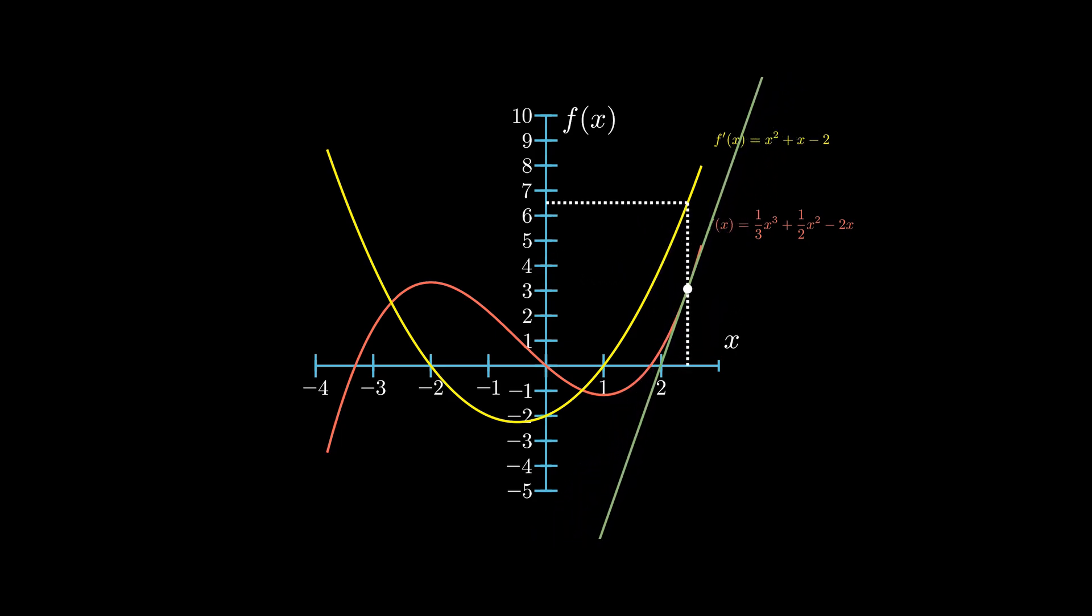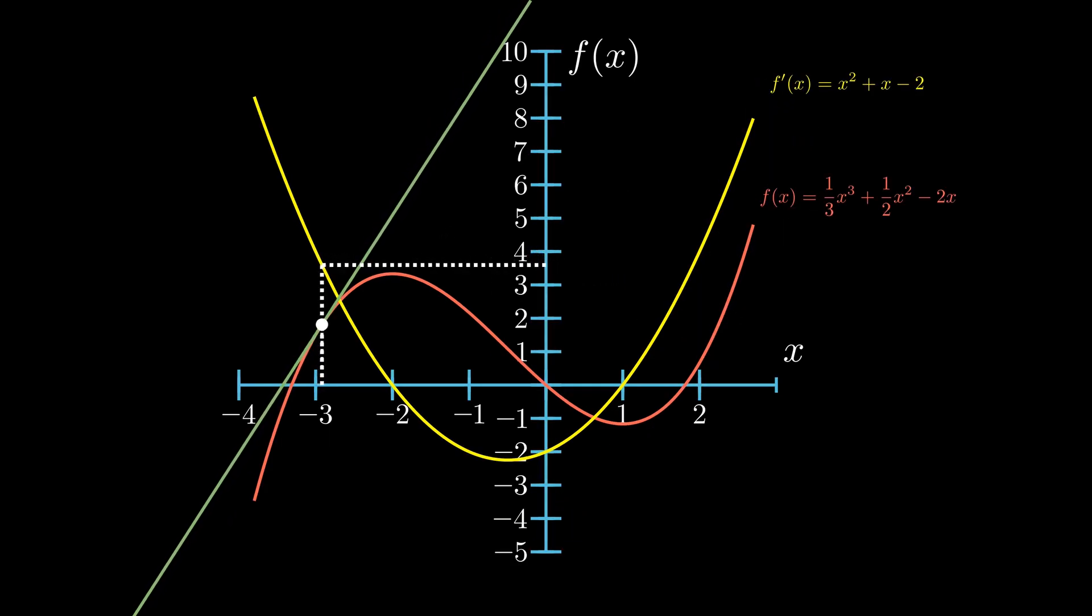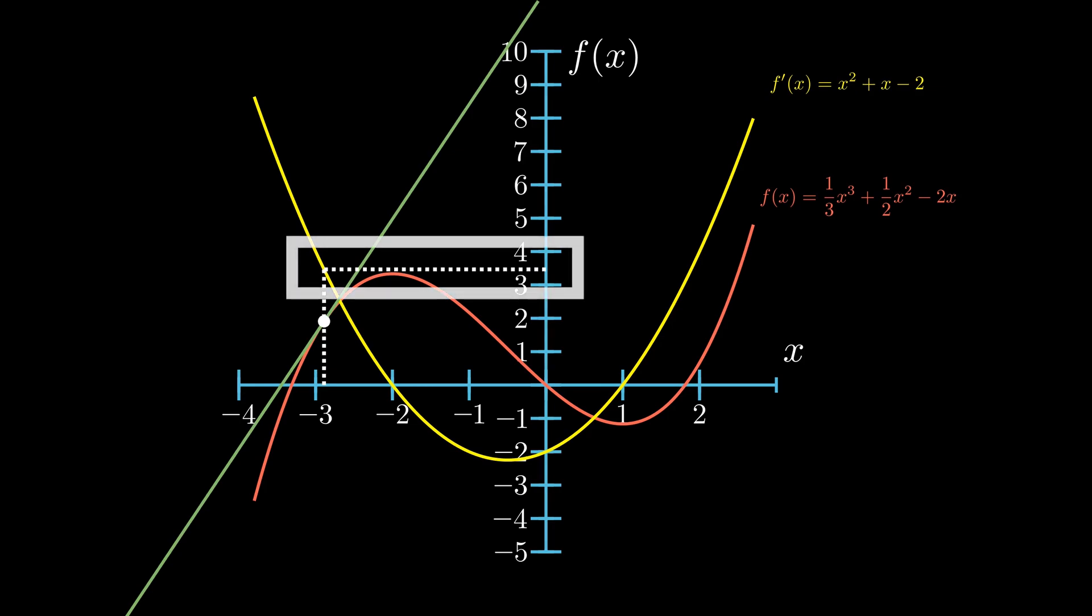We can see that when x is equal to negative 3, the corresponding y values on f'(x) are positive, as indicated by the dashed horizontal line. Simultaneously, the slope on f(x) is positive, that is, the green slope along the fixed dot.